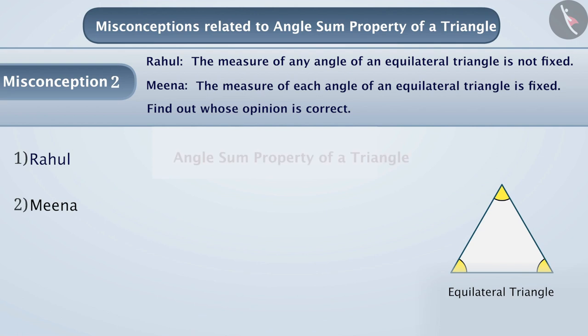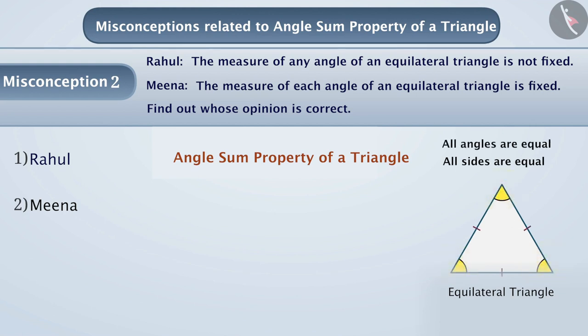Some students do not know the usage of the angle sum property of a triangle. They know that all sides of an equilateral triangle are equal and also that the angles are equal. But they do not understand that when all three angles are equal, the measure of each angle will be 180 degrees divided by 3, that is 60 degrees.